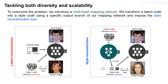To overcome the problem, we introduce a multi-head mapping network. We transform a latent code into a style code using a specific output branch of our mapping network and impose the style reconstruction loss. Unlike the latent reconstruction loss, our style reconstruction loss models domain-specific styles.